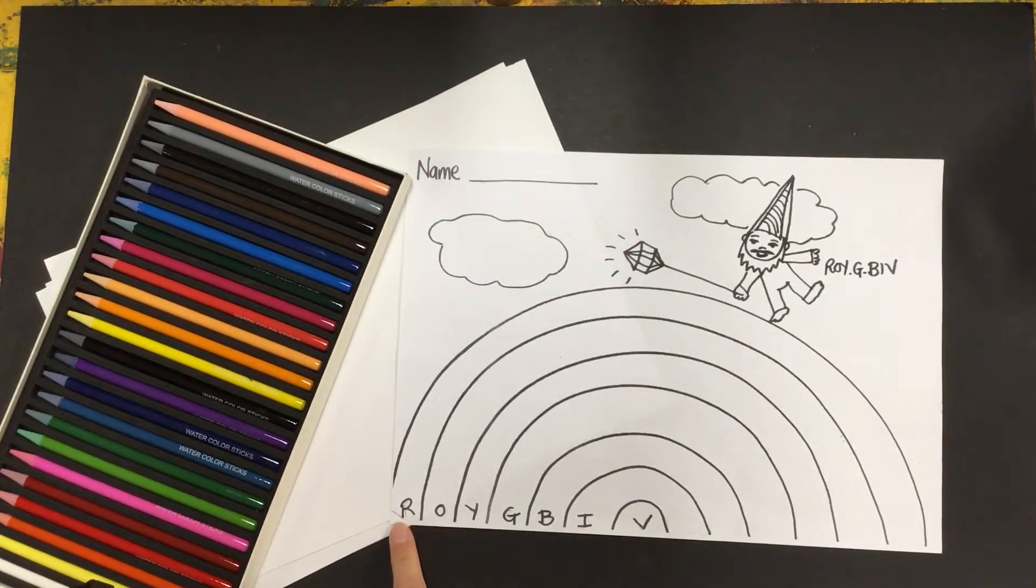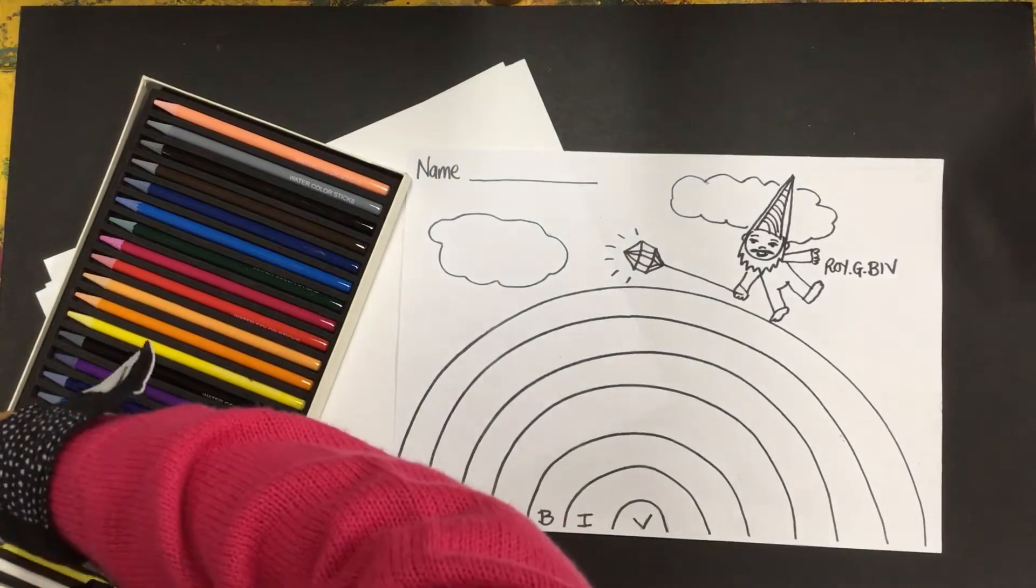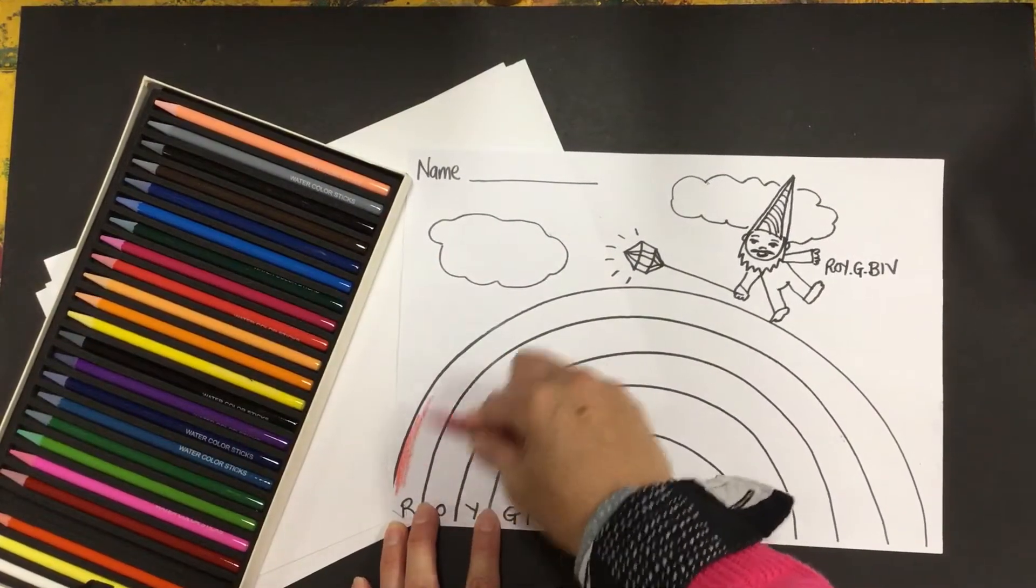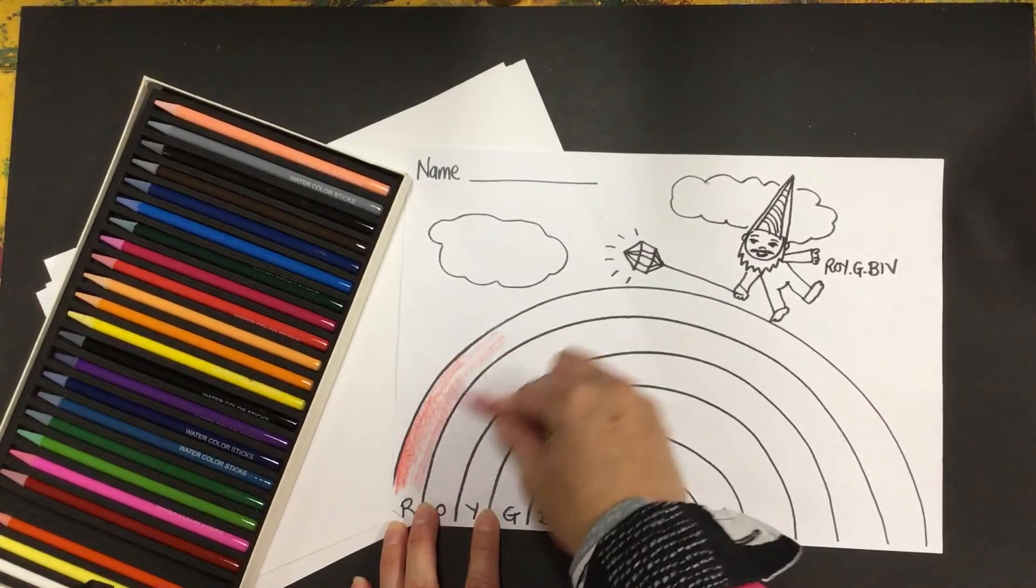Now this is R so that is R is for red, so I'm going to choose red and I'm going to color all of this.